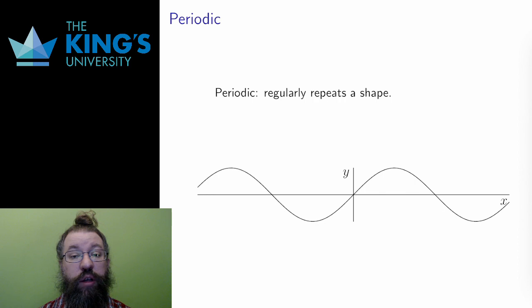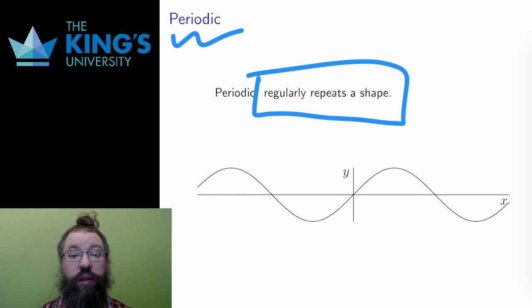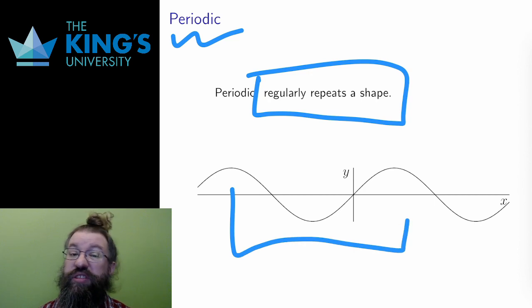I've briefly talked about periodic functions in the previous video when I talked about trig. A function is periodic if it repeats the same shape over and over again. The period is the length of the repeated shape. For the purposes of this course, the trig functions are basically the only periodic functions that we will consider.